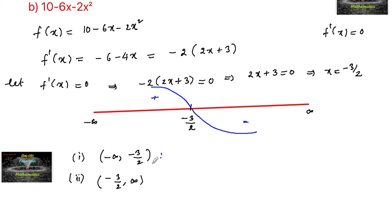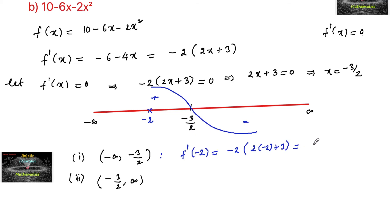To verify generally, take any value in minus 3 by 2 to minus infinity — let's take minus 2. Substituting into f dash of x: f dash of negative 2 equals minus 2 times (2 times negative 2 plus 3) equals minus 2 times negative 1 equals 2, which is positive. So f dash of x is positive in the interval minus infinity to minus 3 by 2, confirming it is increasing.